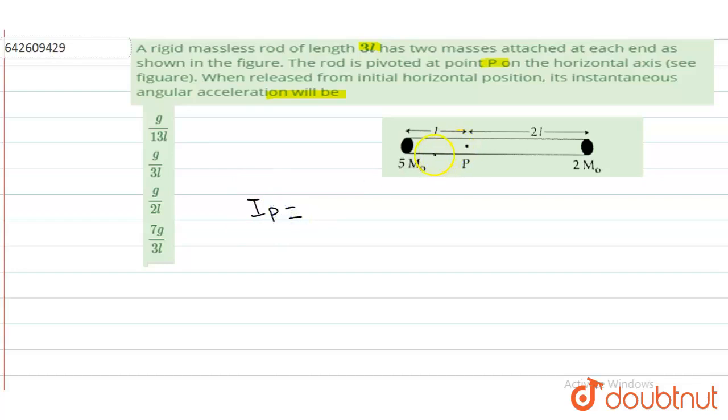This distance is L. What is moment of inertia? M R squared. So it is becoming 5M₀L² plus this is 2M₀ times 2L squared.